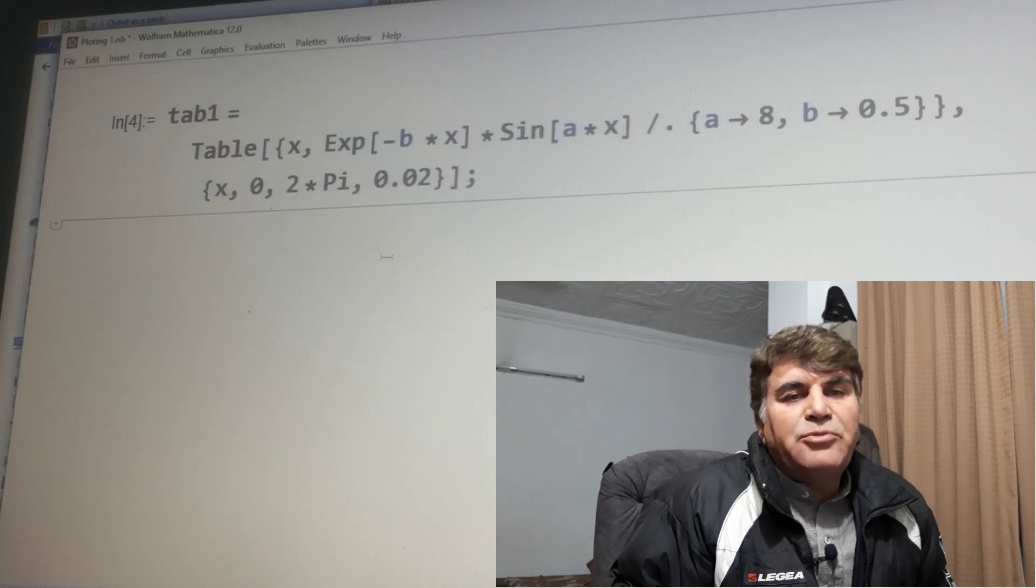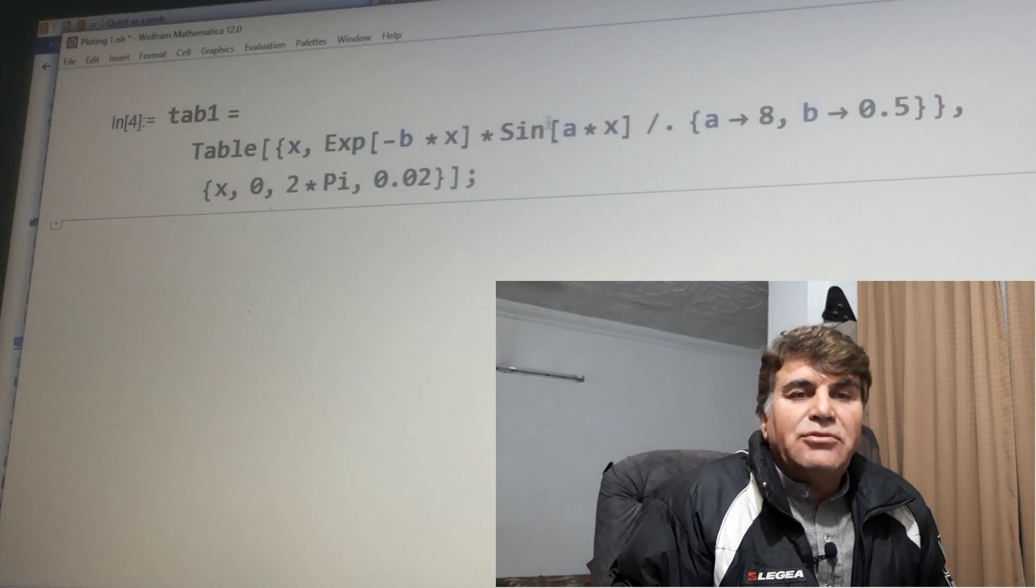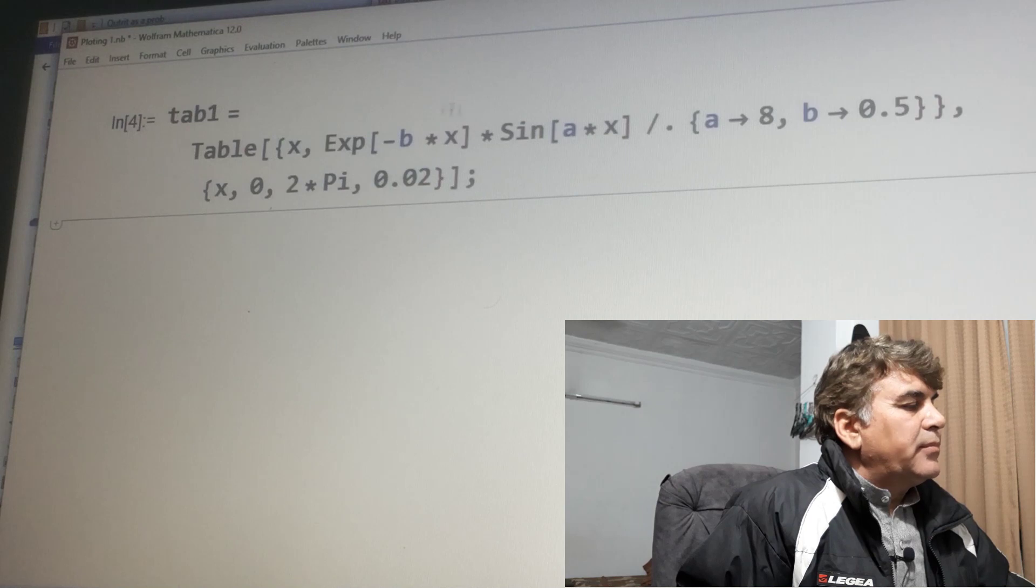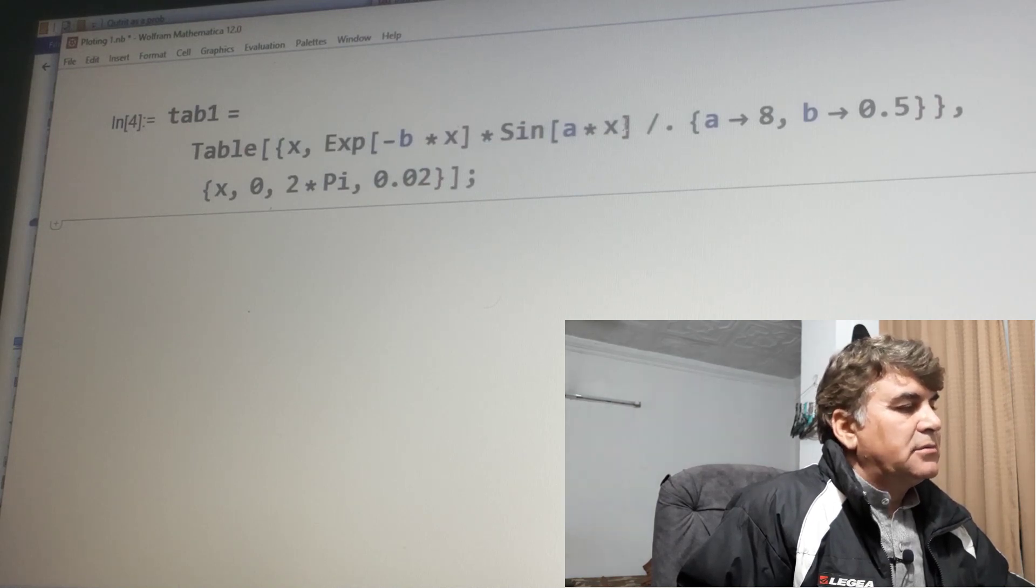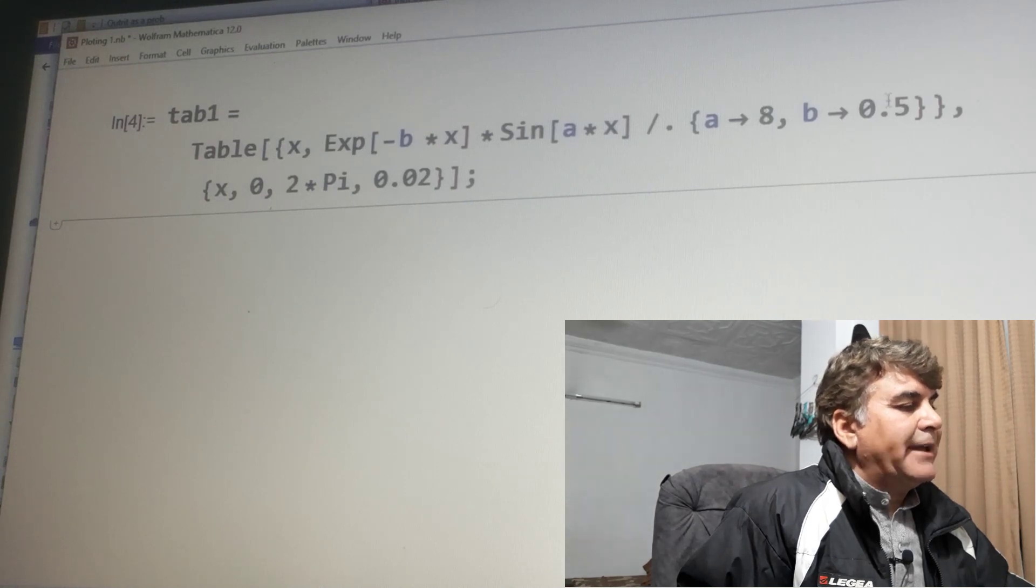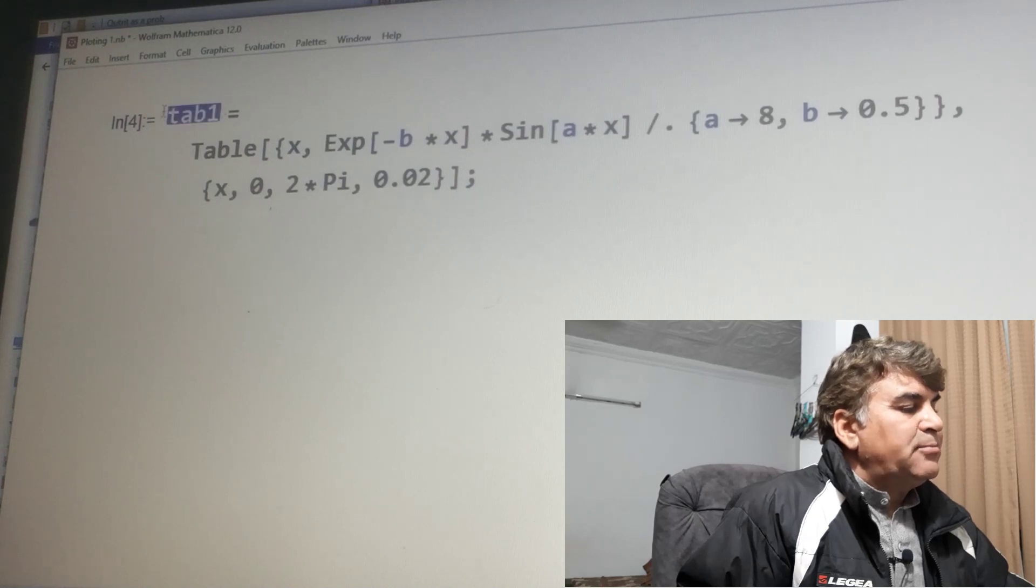Overall there are three different variables which we named as a, b, and x. We fixed the value of a and b to 8 and 0.5, and plotted it against x using the command ListPlot.